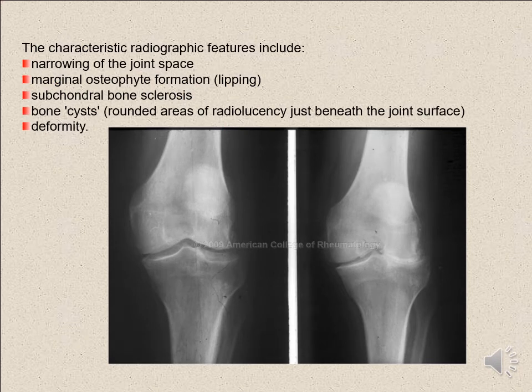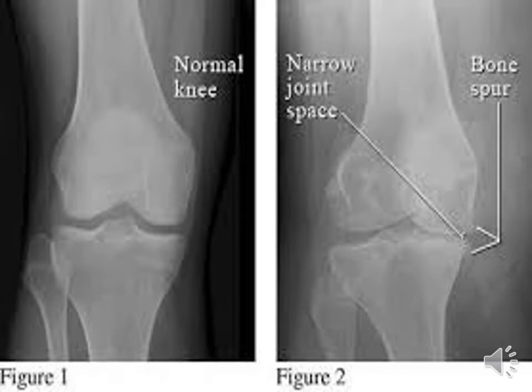The characteristic radiographic features include narrowing of the joint space, marginal osteophyte formation, lipping, and subchondral bone sclerosis. Bone cysts — rounded areas of radiolucency — appear just beneath the joint surface, followed by deformity of the joint surface. Comparing normal versus osteoarthritic radiographs, we can see the narrowing and cysts in the joint bone and the clear difference between the two joints.